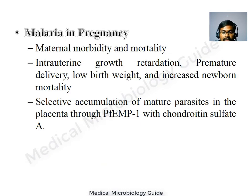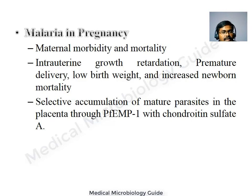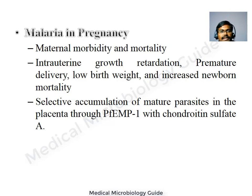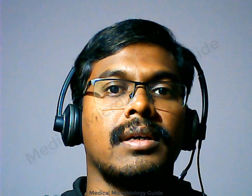Malaria in pregnancy is very important because it increases morbidity and mortality in both mother and fetus. The PfEMP1 protein expressed on infected RBCs attaches to chondroitin sulfate A present in the placenta, leading to selective accumulation of infected RBCs in the placenta and hypoxia for the fetus. This results in intrauterine growth retardation, premature delivery, low birth weight, and increased newborn mortality.